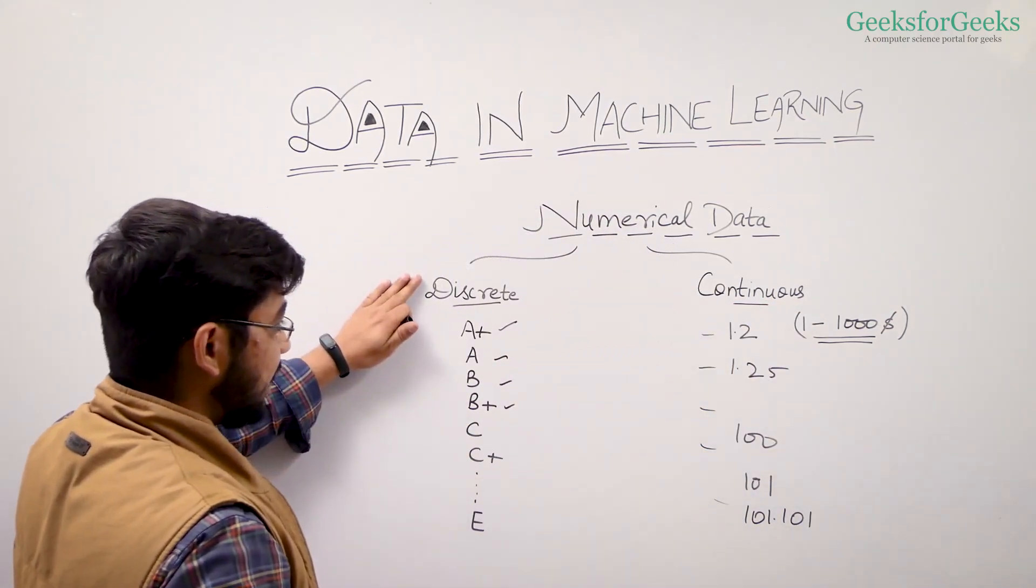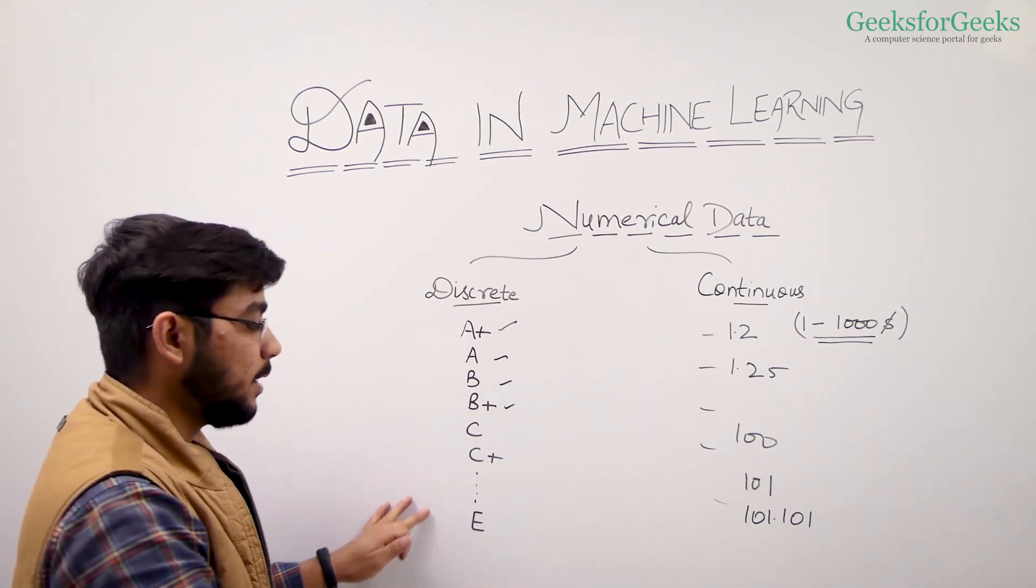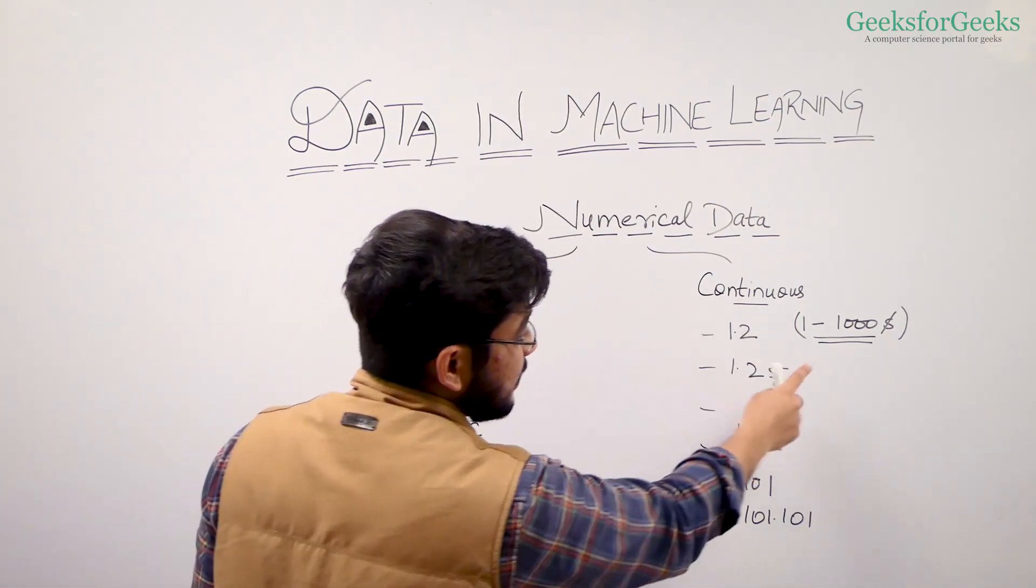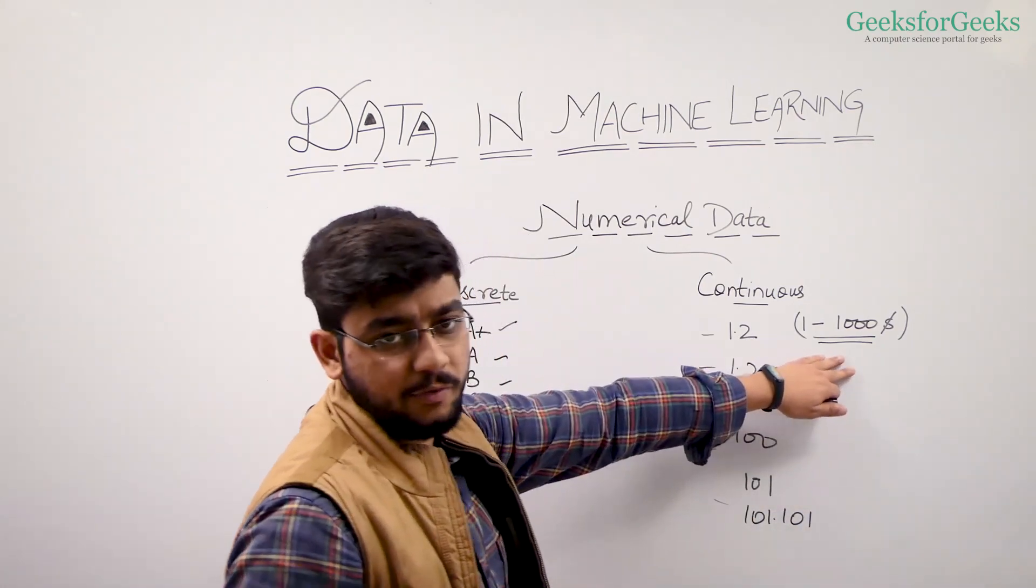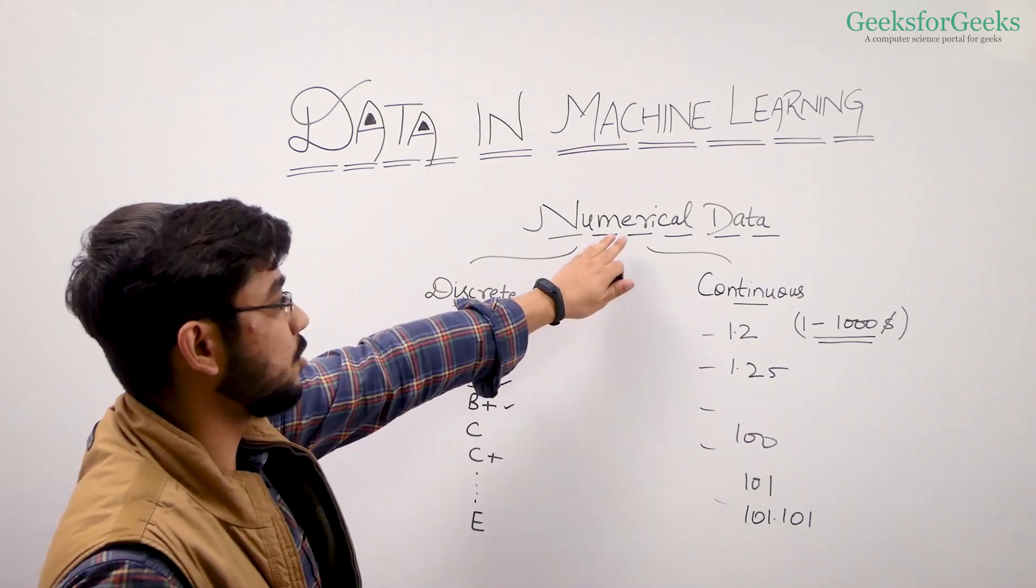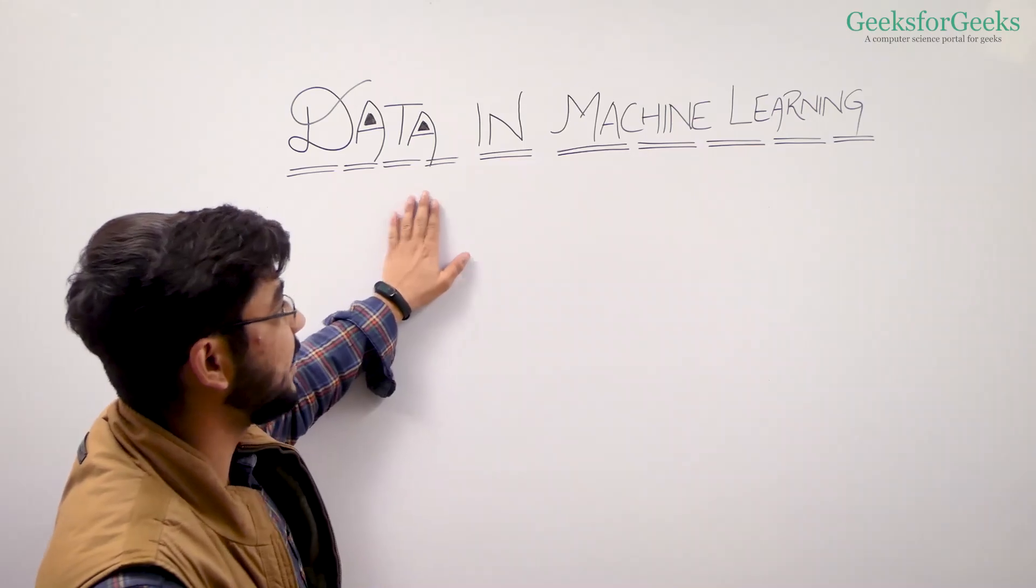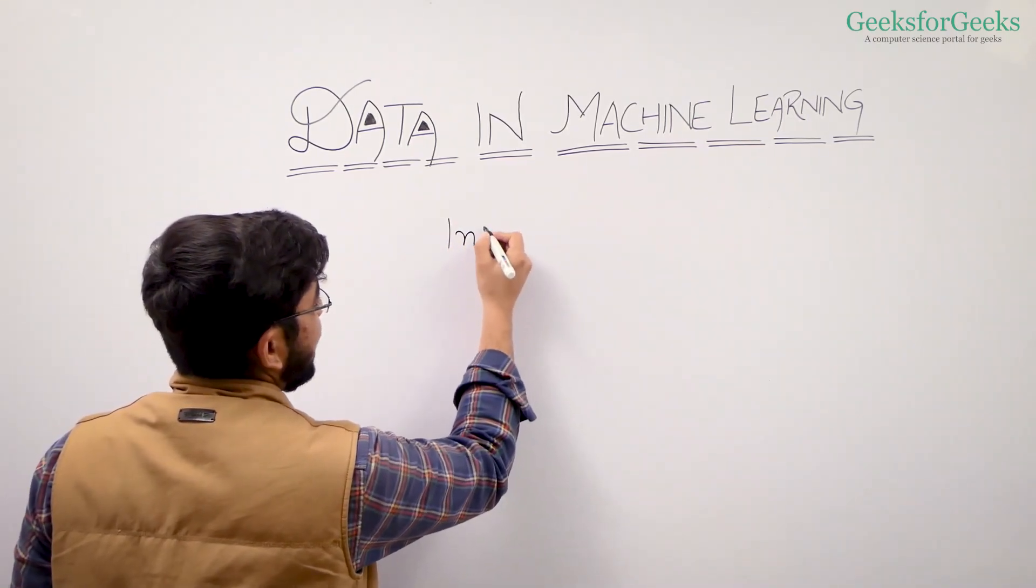So discrete data is the one with unique labels where we know the outcome will be from these labels only. And continuous data is fixed in a given range but can have any value like the price of gadgets or price of property. So this was all about numerical data. Now we have a few more terms associated with data in machine learning. Let's talk about interval data.